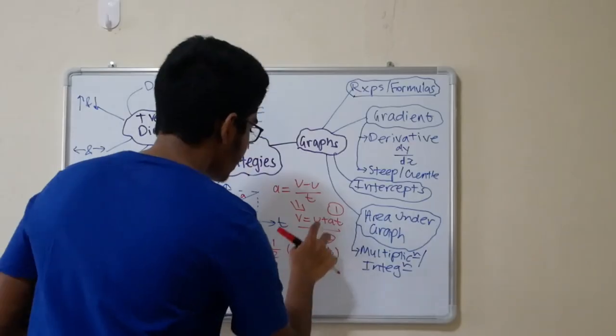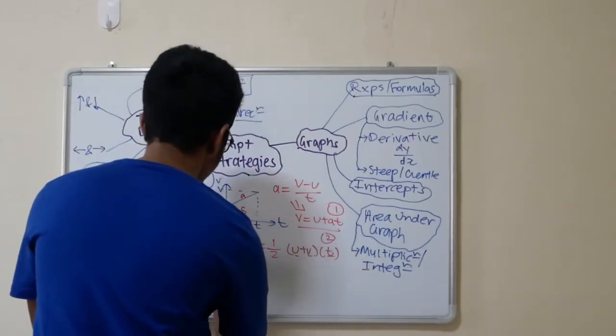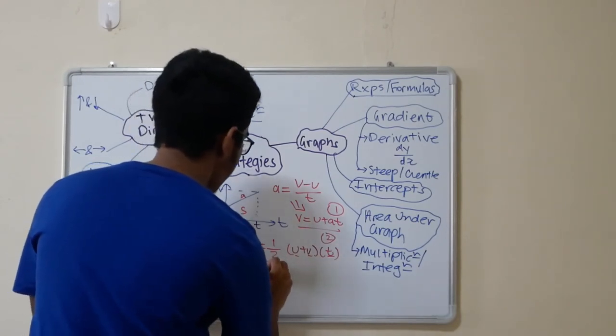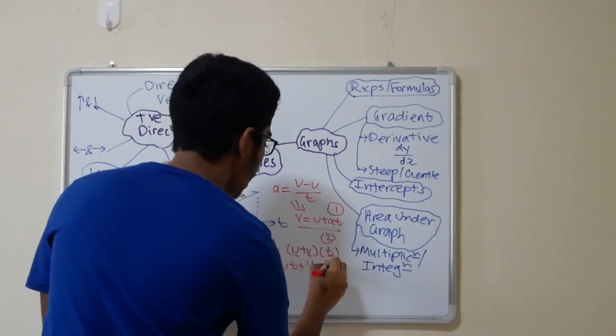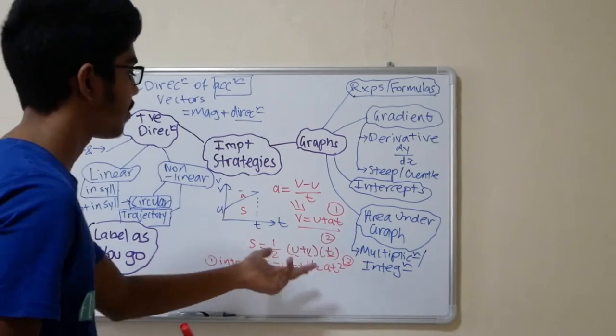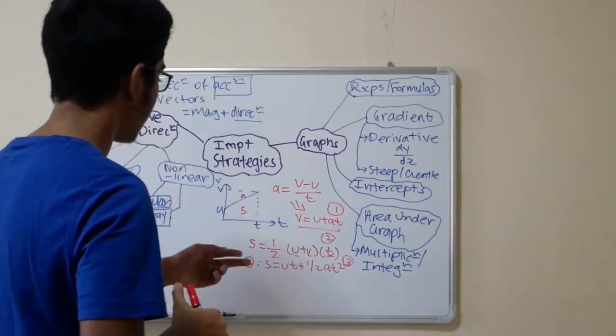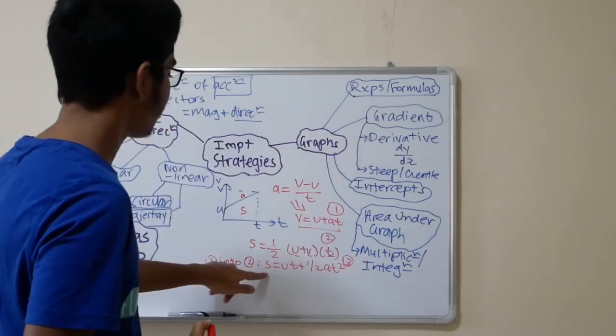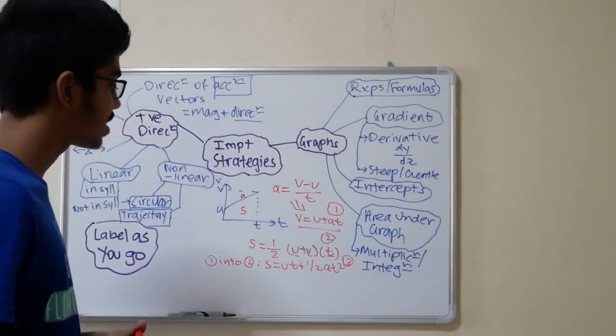Now, how do you get the other two formulas? This is more mathematical. If you just sum this into this, equation 1 into 2, you will get the next formula, which is s is equal to ut plus half at squared. And this is a very important formula because it's a function of time for the graph of s. This is something I talk about. Relationships and formulas. Finding the variables. Finding the constants.